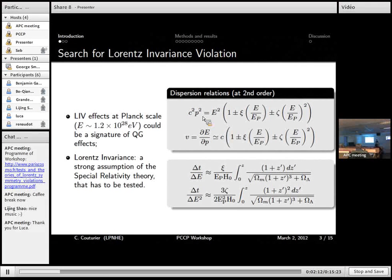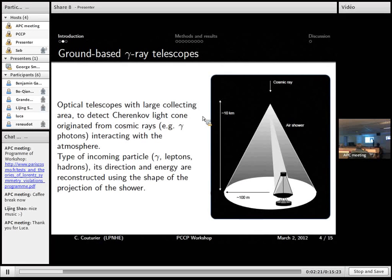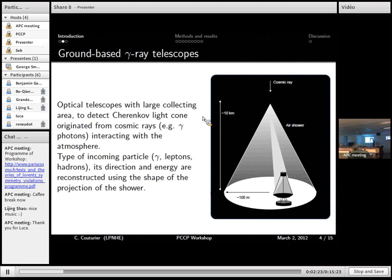To look for those effects, we are currently using, among others, Cherenkov telescopes, because those have a rather large energy lever arm.